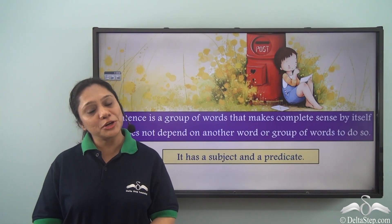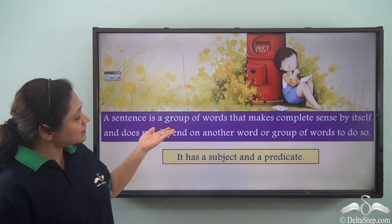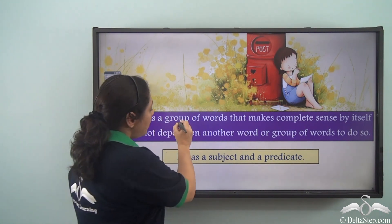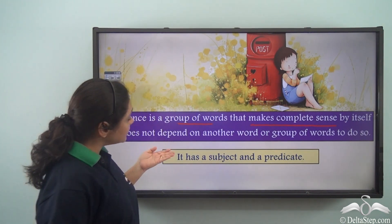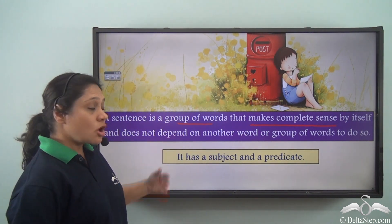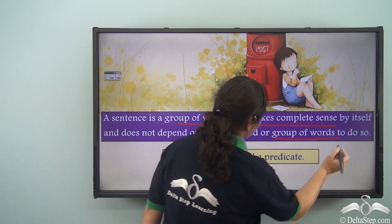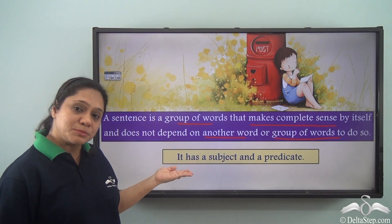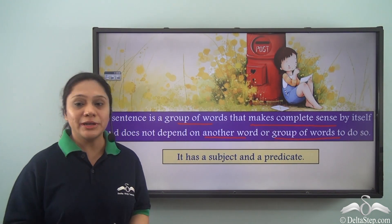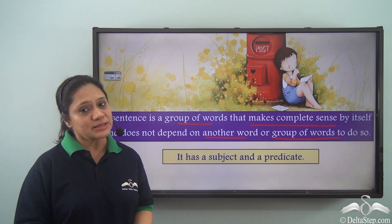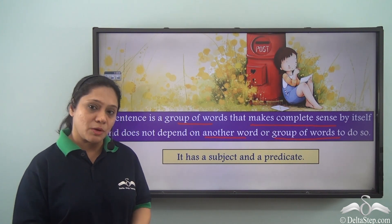By now you already know what a sentence is. You know that a sentence is a group of words that makes complete sense by itself and does not depend on another word or group of words to do so. It has a subject and a predicate. Now you have already learnt about complex sentences. Today we shall learn a little bit more about them.